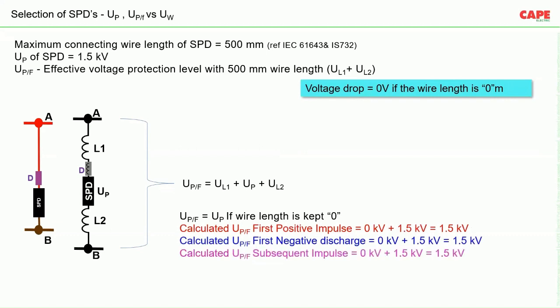The best-case scenario is a wire length of zero meters. With zero wire length, the calculated UPF for the first positive, first negative, and first subsequent impulses are all equal to just 1.5 kV — only the SPD's own protection level. Since there is no wire, there is no voltage drop, and di/dt becomes irrelevant, irrespective of the lightning protection level.